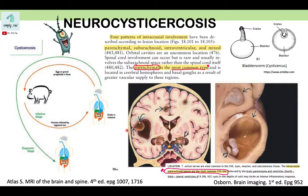Some larvae travel to the smaller branches of the cortical arteries and lodge mostly at the gray-white matter junction. These regions — the gray-white matter junction and the basal ganglia — are preferred lodging sites because, similar to metastasis, areas of abrupt change in caliber of the blood vessels are where metastatic and infectious agents tend to lodge. In addition, there is greater vascular supply to the basal ganglia and cerebral hemispheres.